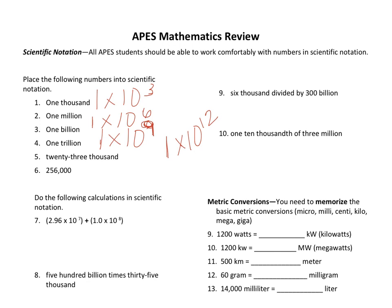Moving on to twenty-three thousand — I'm going to put this in scientific notation. I move the decimal one, two, three, four times. So my answer is two point three times ten to the fourth, since I moved the decimal four times.